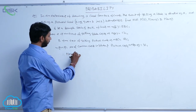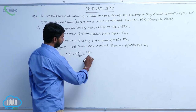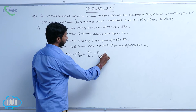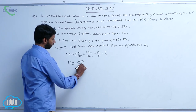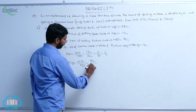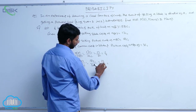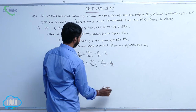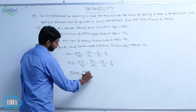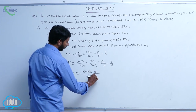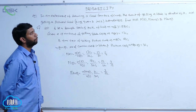Therefore, P of A is equal to N of A by N of S, which is equal to 13C1 by 52C1, equal to 13 by 52. P of A intersection B is equal to N of A intersection B by N of S, equal to 3C1 by 52C1, equal to 3 by 52.